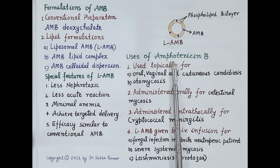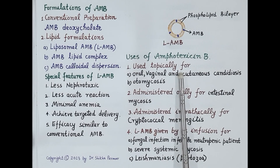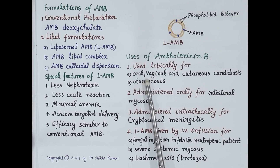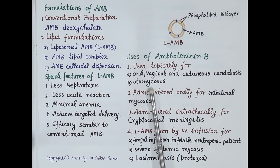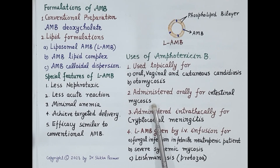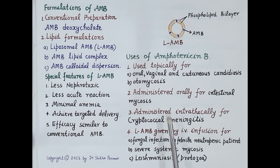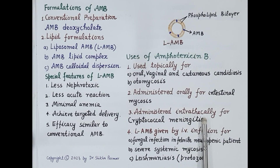Uses of amphotericin B include topical treatment of oral, vaginal, and cutaneous candidiasis, and otomycosis. It can be given orally for intestinal mycosis, where it acts locally in the intestine without systemic absorption. Due to poor CSF penetration, it is administered intrathecally for the treatment of cryptococcal meningitis.